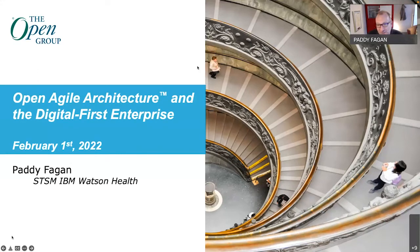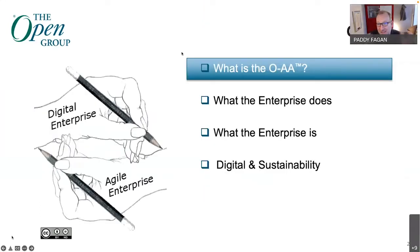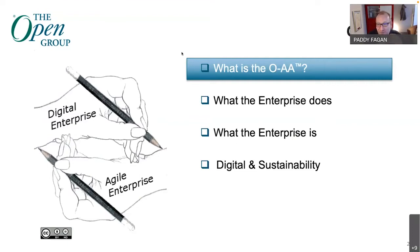I'm going to talk today about a couple of key topics around the OAA. I'm going to talk about what the OAA is itself, which hopefully is a useful introduction, and then expand on two key topics within it — really that division between what the enterprise does and also what the enterprise is. Drawing out that distinction is one of the key things we document in the OAA, and hopefully in doing so I can draw those two topics together a little bit more.